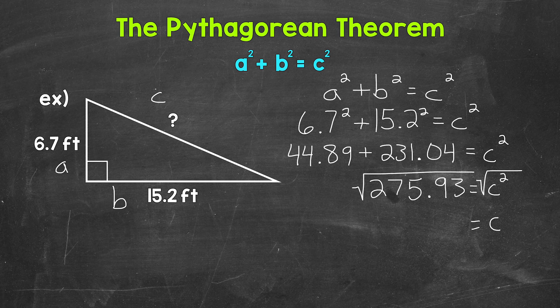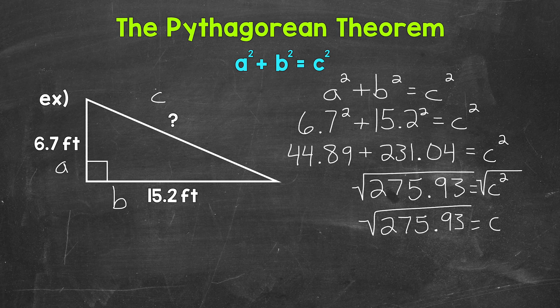And as far as the square root of 275.93, that is not a perfect square. So we don't end up with a whole number answer. So c equals the square root of 275.93.